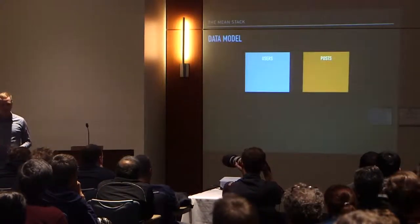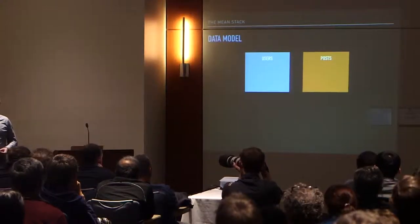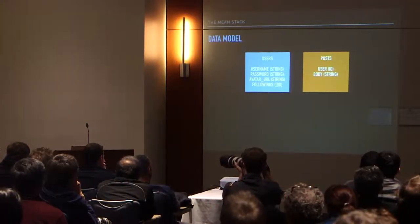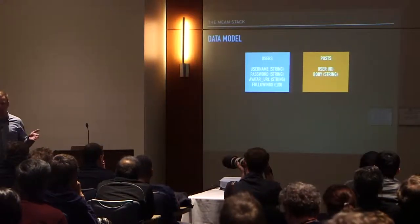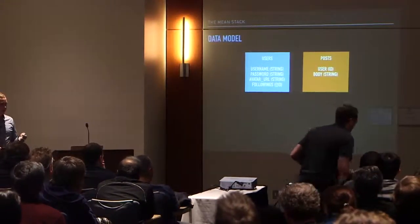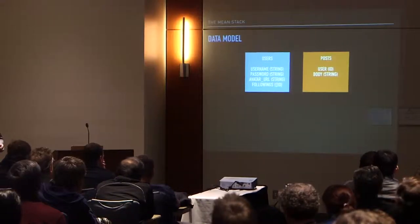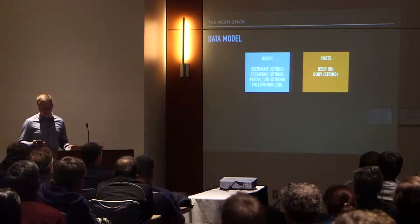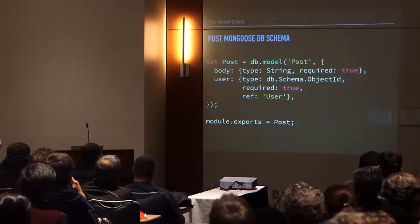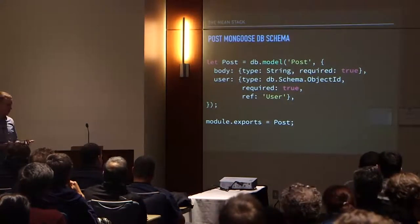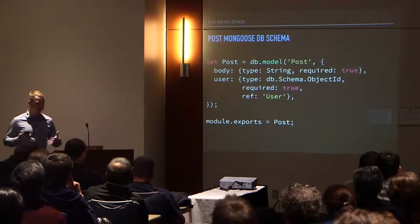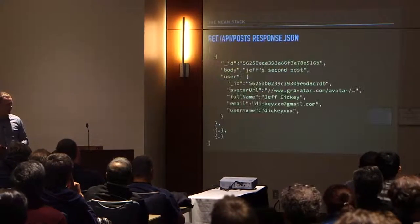The data model has two collections: posts and users. Each user is going to have a username, a password, an avatar URL, and an array of all the users that user is following — it's an object ID, essentially a foreign key. The post is going to have a user that created it (just an ID), as well as a string for the body of that post. We're going to use Mongoose as the ODM to interface between Node and the database. This allows us to define the schema — we can say what's required and how references are linked to each other.